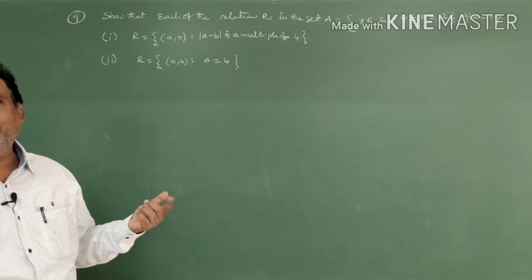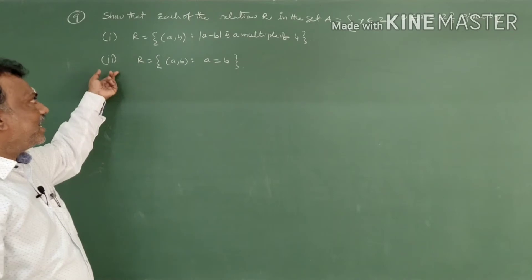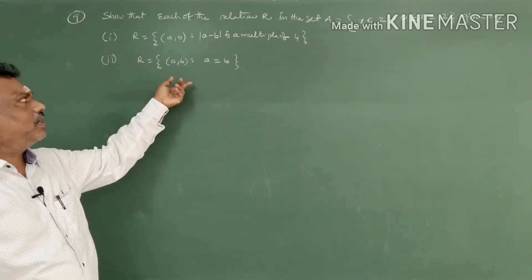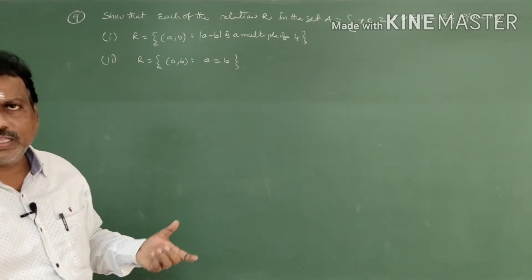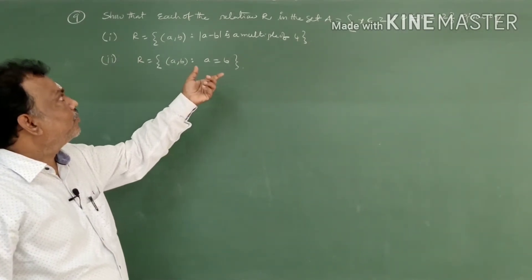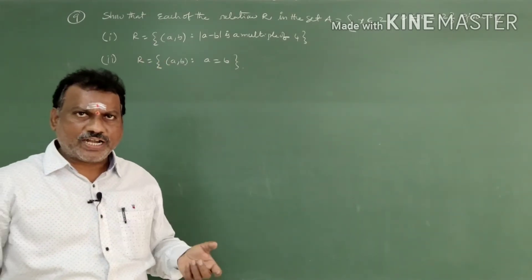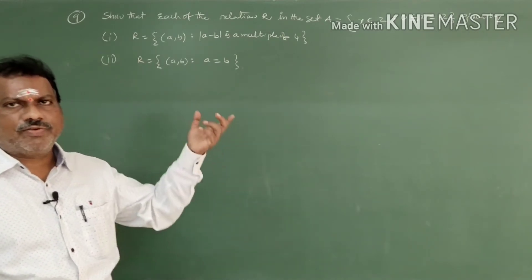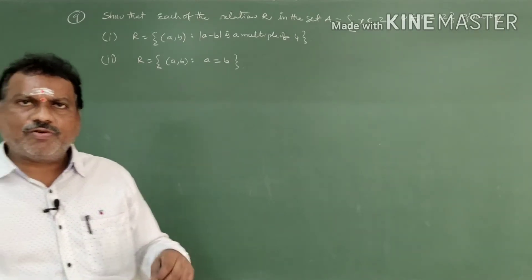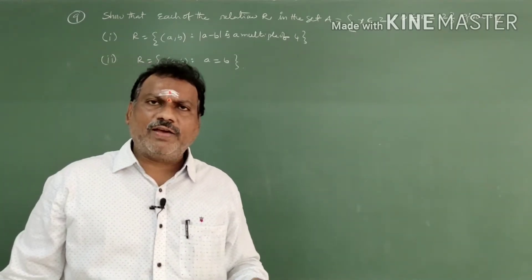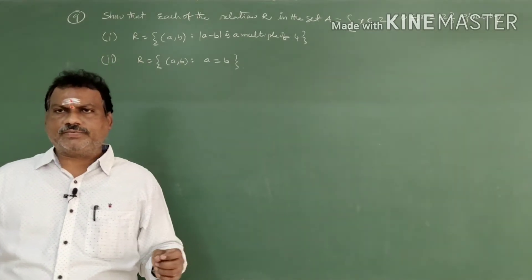The second subdivision: R equals the set of ordered pairs (a,b) such that a equals b. We are going to prove whether each is an equivalence relation or not. For any relation to be an equivalence relation, it must definitely be reflexive, symmetric, and transitive.